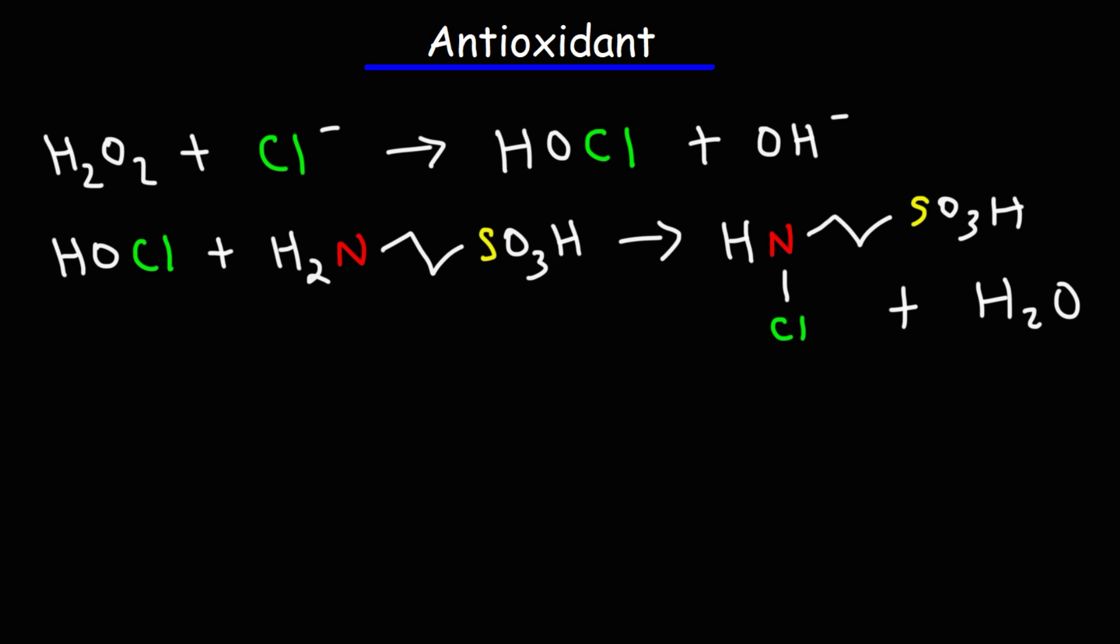Now let's talk about taurine's role as an antioxidant as it detoxifies oxidants like HOCl, hypochlorous acid, and HOBr, hypobromous acid. Chloride is found readily in the body, and when it interacts with hydrogen peroxide it can be oxidized into hypochlorous acid. And the same is true for bromide - bromide can react with hydrogen peroxide to produce hypobromous acid.